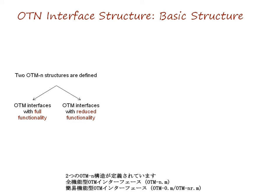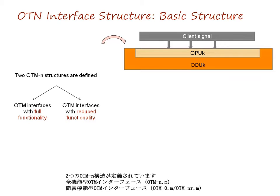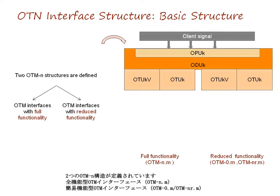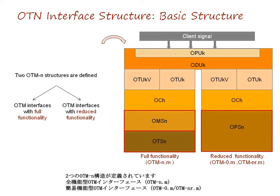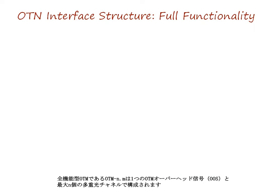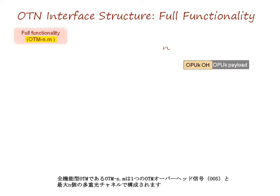Two OTMN structures are defined: OTM interfaces with full functionality, OTMN-M, and OTM interfaces with reduced functionality, OTM0-M and OTM-NR-M. OTM with full functionality, OTMN-M, comprises one OTM overhead signal and a maximum of M multiplexed optical channels.